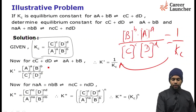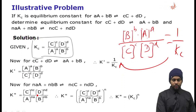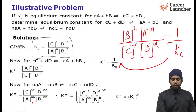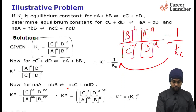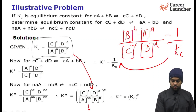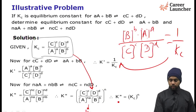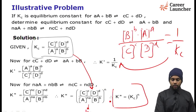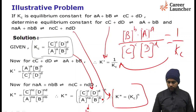For the third reaction, we can similarly obtain K double dash. It is written as the concentration of products raised to their stoichiometric coefficients divided by concentration of reactants raised to their respective stoichiometric coefficients. K double dash can be simplified — taking common factors, it becomes Kc to the power n. So K'' = Kc^n. It is very easy to obtain the equilibrium constant using these relationships.